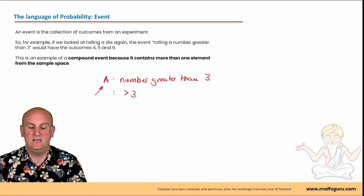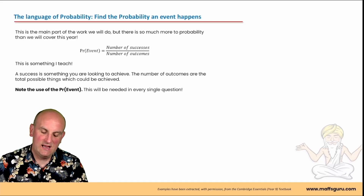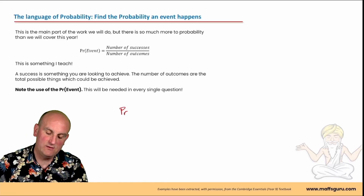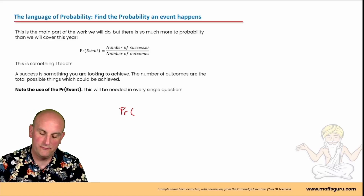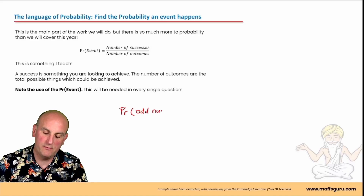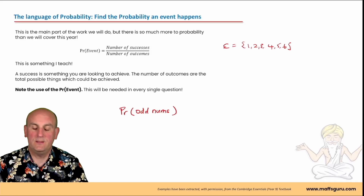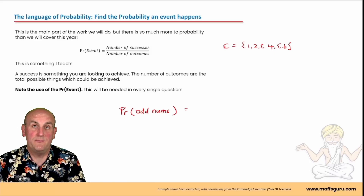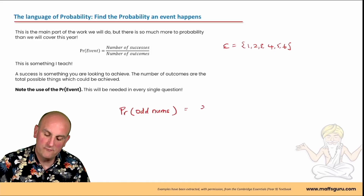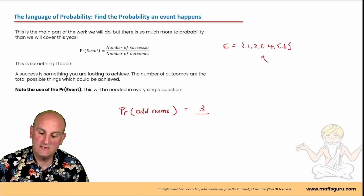Finding the probability an event happens: you must start everything with PR and an open bracket. Inside the bracket, you write what it is you are looking for - for example, odd numbers. When rolling a standard die with sample space 1, 2, 3, 4, 5, and 6, if I wanted to find the probability of getting an odd number, the number of successes goes on top. The number of odd numbers for a standard die is 3, divided by the number of outcomes, which is 6. So 3 on 6, which gives me one half.